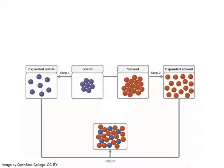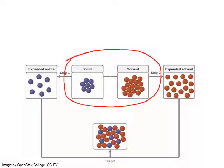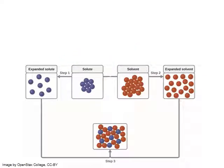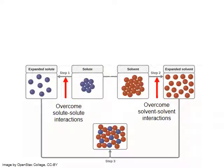Within a mixture of two components, you have three different types of intermolecular interactions. Both the solute and solvent have intermolecular interactions before mixing — these are the solvent-solvent and solute-solute interactions that occur between molecules of the same type. In order for a solution to form, the solute-solute and solvent-solvent interactions must be overcome, and a new interaction must form between the solute and solvent particles when they mix.